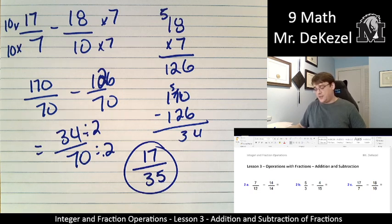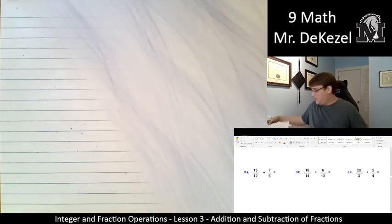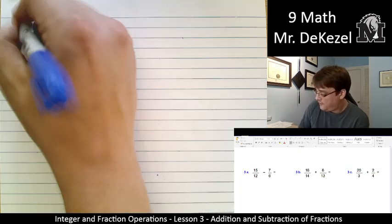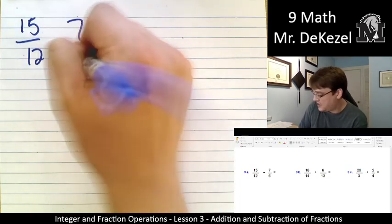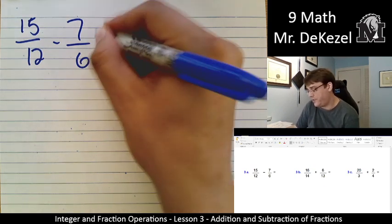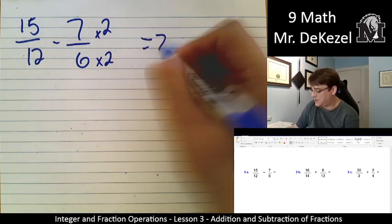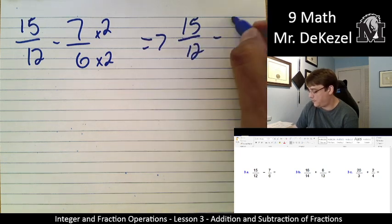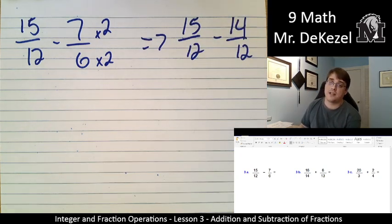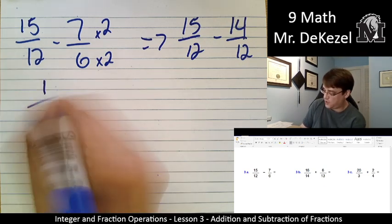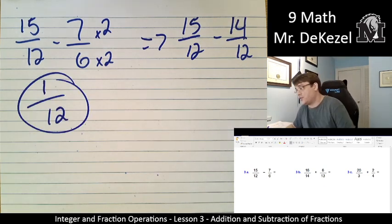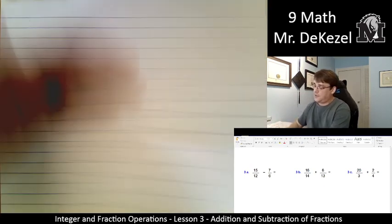So that would be 34 divided by 2 is 17 out of 35. Okay. Quite a few steps, but making sure that you get the right answer by doing this is very important even if you feel like you know what you're doing, no problem. Let's do three more. We're going to do them quickly. Might not get to them all. 15 out of 12 minus 7 over 6. I'm going to multiply both of these on this side by 2. And I'm going to get 15 out of 12 minus 14 out of 12. 15 minus 14 is 1, so that's 1 twelfth. And that is already reduced as much as it can. Okay.